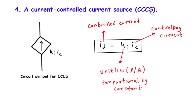The CCCS is represented by a specific circuit symbol, which helps us identify and differentiate it from other components in a circuit. You can see the symbol displayed on screen now — remember, this symbol will be helpful for you to recognize the CCCS in circuit diagrams. Now let's discuss the relationship between the controlled current ID and the controlling current IC.